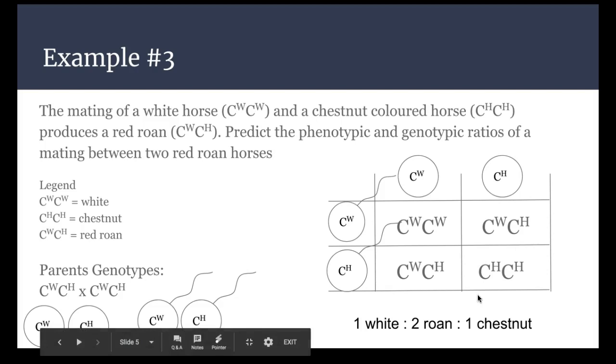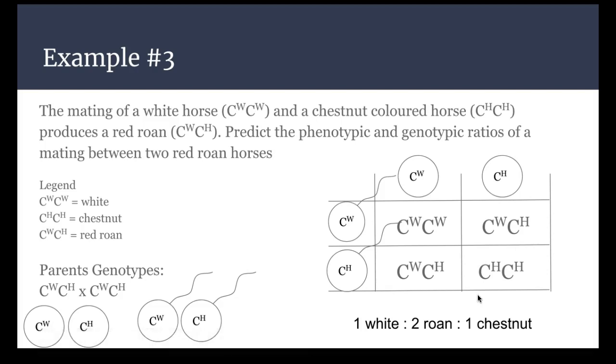So tomorrow in class we're going to be working through examples about incomplete dominance and co-dominance. You do need to know the definitions of them and be able to tell the difference between the two. Remember that incomplete dominance is like a mixture of the two to create a whole new color, whereas co-dominance creates a different name but both of the alleles are still present, but the other one it makes a whole new color. So hopefully you guys had an easy time understanding this. If not, you can ask me questions tomorrow when you see me, but other than that have a wonderful evening and I will see you all tomorrow.